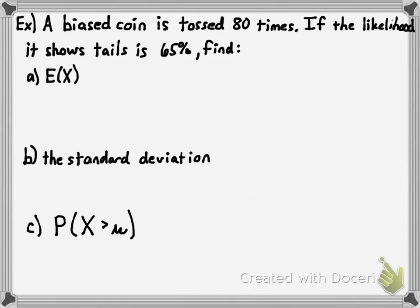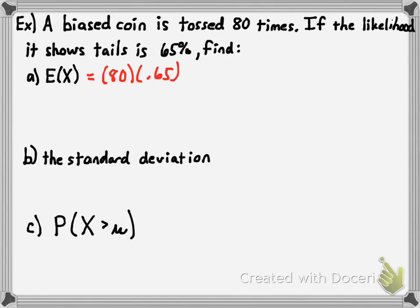Let's put these into practice. A biased coin is tossed 80 times and the likelihood that it shows tails is 65%, so it's more heavily weighted towards tails. We're going to find the expected value of X, then the standard deviation, then the probability that X is greater than the mean. For the expected value: 80 times 0.65 equals 52 — you'd expect 52 tails.